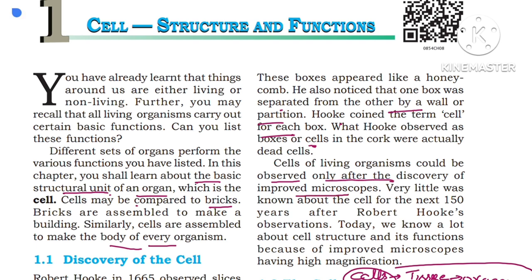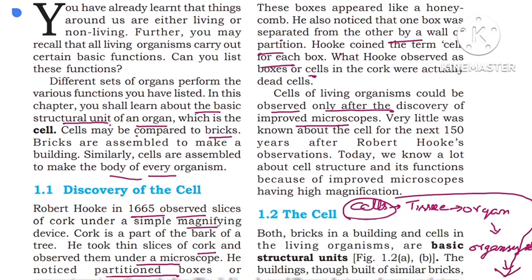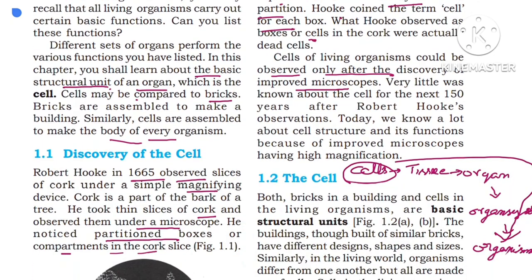Nowadays we have many improved microscopes. With the help of a microscope we can observe cells clearly, and not only observe cells but also see the cell organelles present inside and understand their functions. For the 150 years after Robert Hooke's observation, very little was known about cells. Today we know a lot about cell structures and functions because of improved microscopes with high magnification.